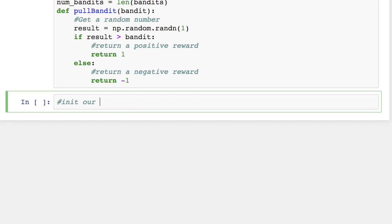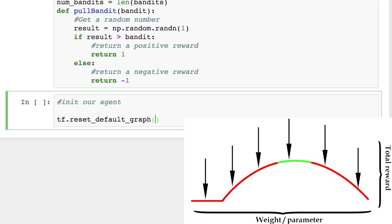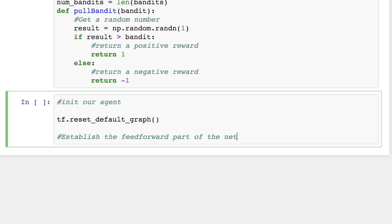Our policy gradient network consists of a set of weights and each weight corresponds to each of the possible arms to pull and represents how beneficial our agent thinks it is to pull each arm. We'll initialize the weights to 1, which means our agent will be optimistic about each arm's potential reward.